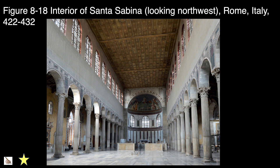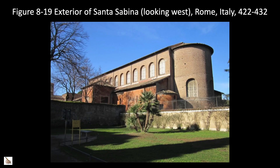Interior of Santa Sabina, looking northwest, Rome, Italy, 422 to 432 CE. This church was built a century after Old St. Peter's. Another interpretation of the apse is the idea of a giant gateway pointing towards paradise. Images of salvation would be located in the upper portion. The priest stood in front of the altar with the Holy Bible, which Christians believed was the way to salvation. Located on top of a hill, similar to some pagan temples, this location was important as a symbol of the new official religion of Rome.